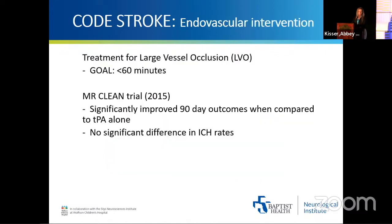Endovascular intervention is a treatment for large vessel occlusion with a goal of getting to puncture in less than 60 minutes. The MR CLEAN trial in 2015 showed that these patients had significantly improved outcomes at 90 days when compared to TPA alone, without a difference in ICH rate — proving it to be an effective treatment that did not increase the risk of hemorrhage.